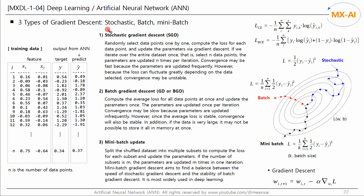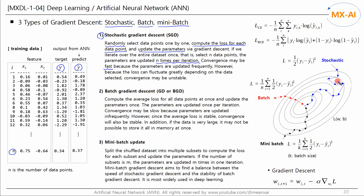Next, let's look at three types of gradient descent: stochastic gradient descent, batch, and mini-batch gradient descent. We have a dataset with n data points with target y values and predicted y-hat values. For stochastic gradient descent, randomly select data points one by one, compute the loss for each data point, and update the parameters via gradient descent. If we iterate over the entire dataset once — that is, select n data points — the parameters are updated n times per iteration. Convergence may be fast because parameters are updated frequently. However, because the loss can fluctuate greatly depending on the data selected, convergence may be unstable.